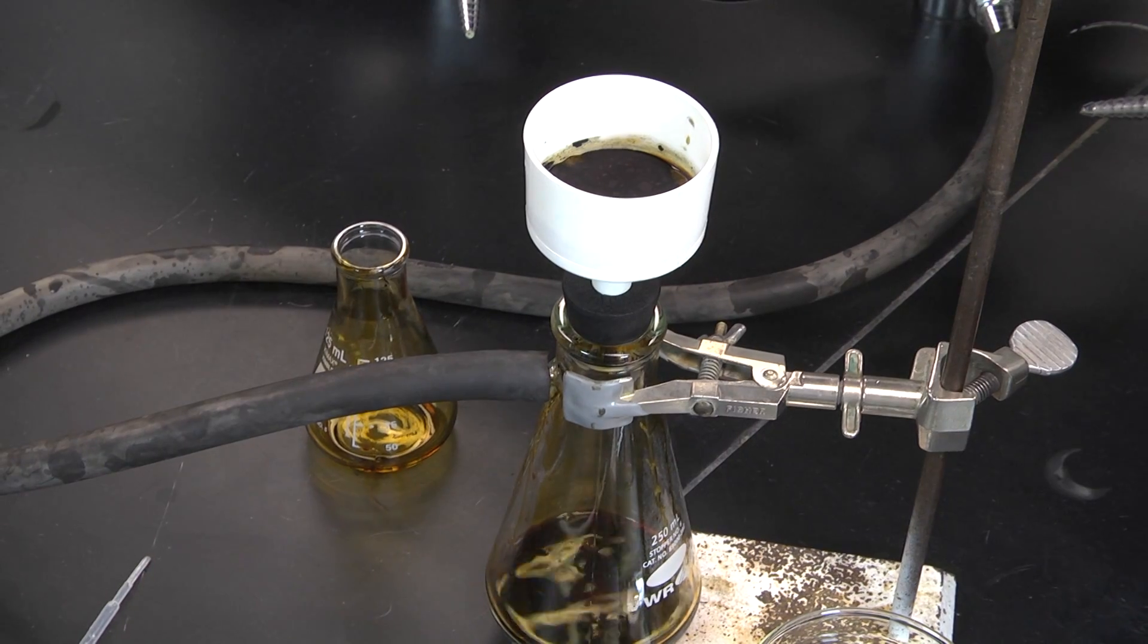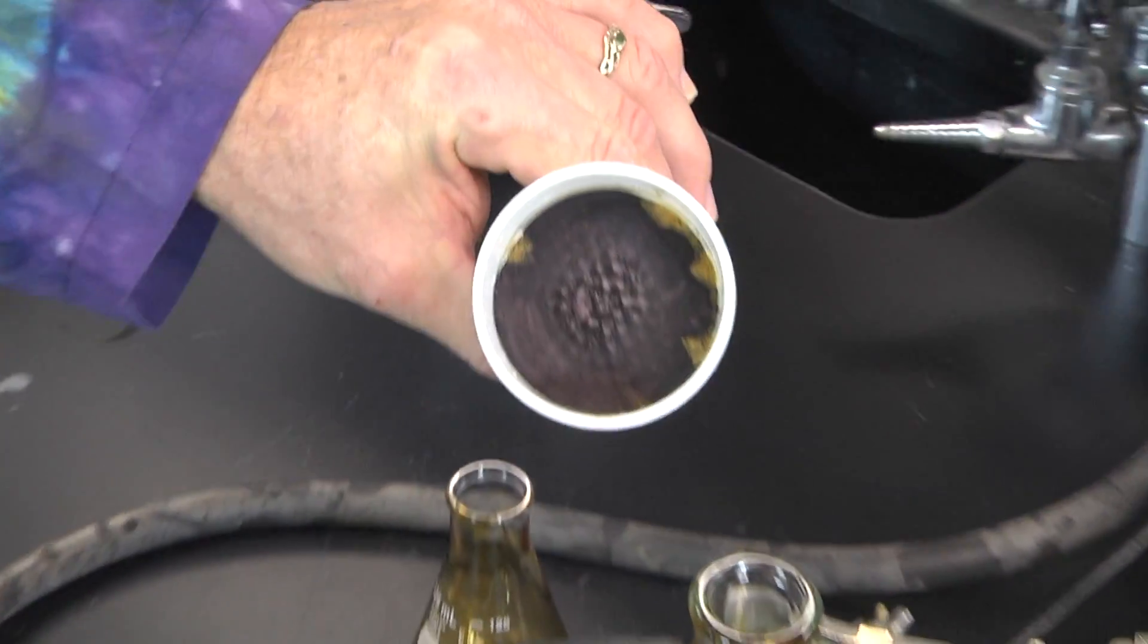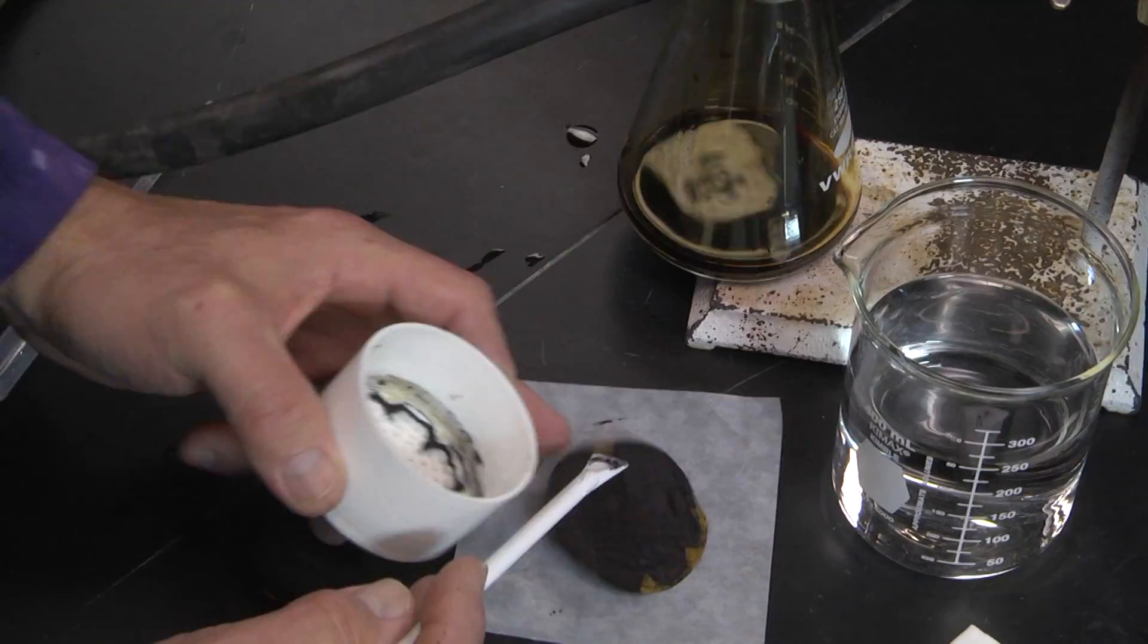Continue drawing air through the funnel until the indigo appears to be dry. Finally, remove the filter paper and transfer the solid indigo to an appropriate container.